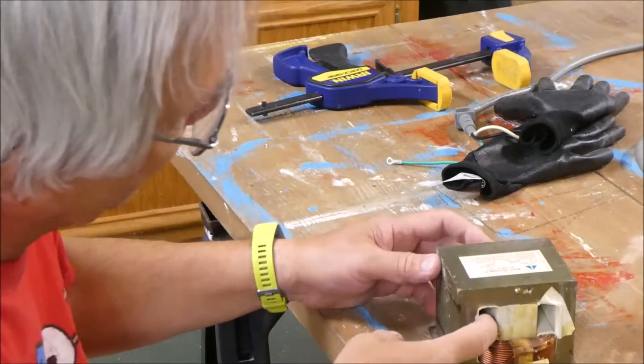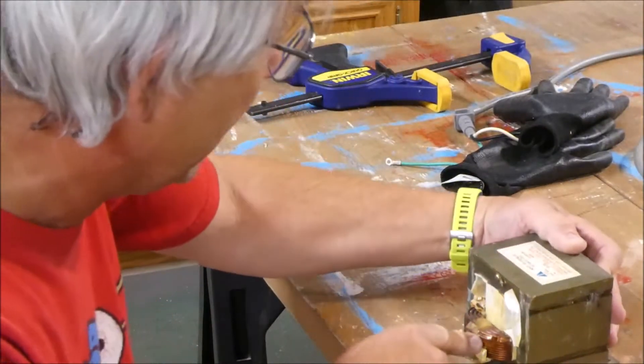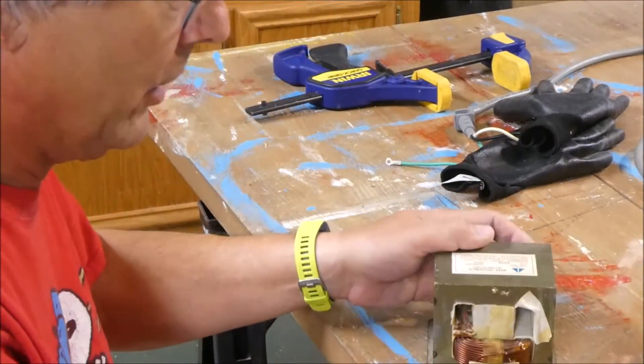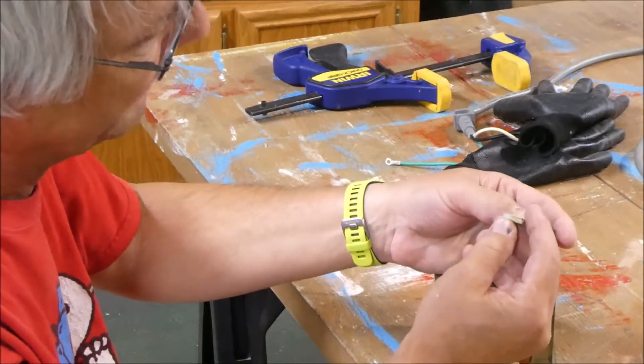Once you've got that winding removed, careful not to damage your windings here, hopefully not. You might find a couple of pieces of metal like this. This is a laminated piece.